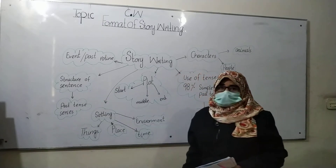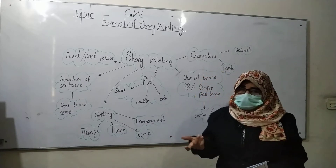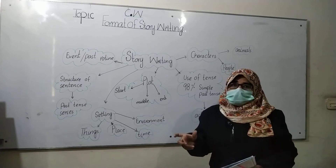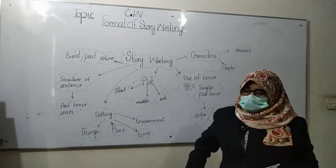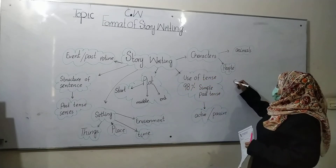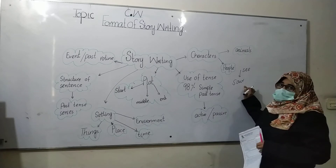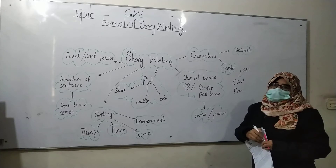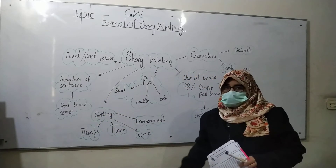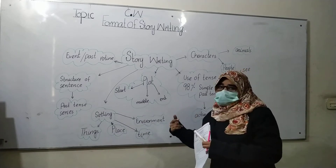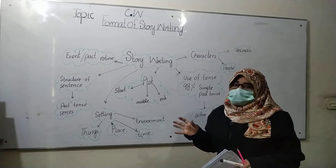Next is the structure of the sentence. The sentence structure should be sequential and in series. For example: 'Once upon a time, I saw a thirsty crow — he flew here and there.' 'Saw' is the second form of 'see', and 'flew' is also the second form — both are simple past tense. When you are writing, maintain the sequence; do not break the continuity of events. This is very important for story writing and is included in its elements.